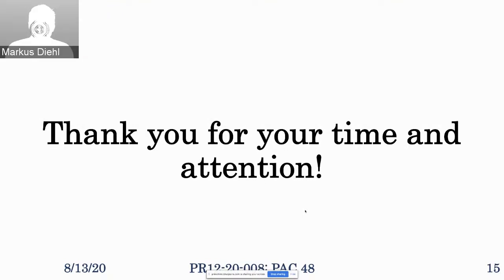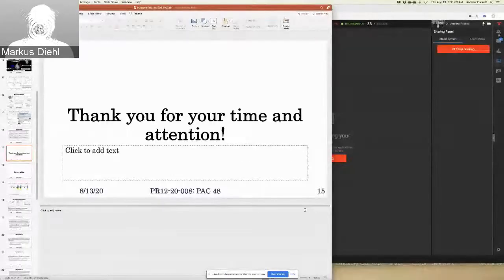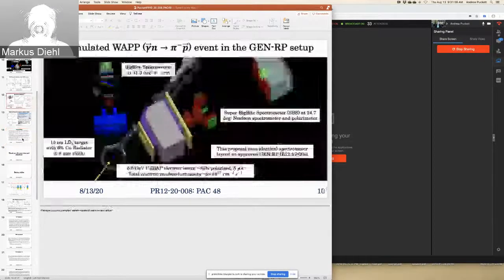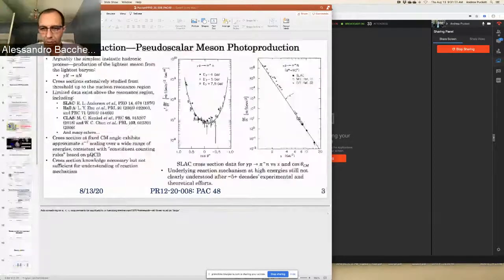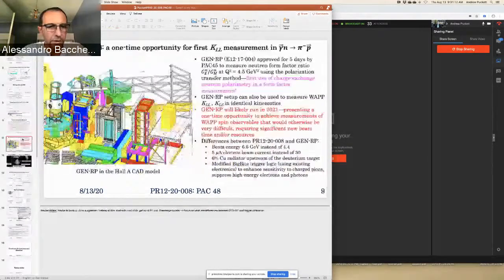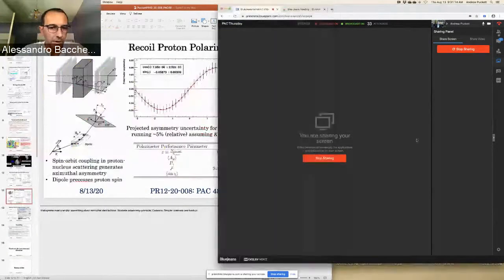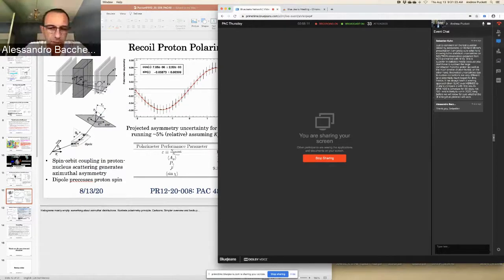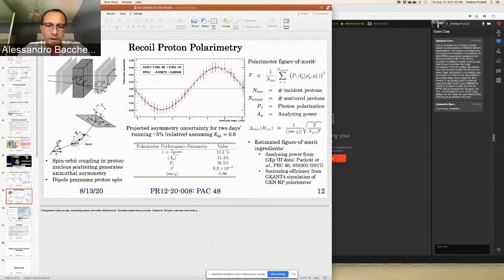Thank you very much. The questions will be started by Alessandro Paquetta, who is the first reader. Thank you, Andrew, for the presentation. In the presentation, you make the statement that you can provide an unambiguous test of twist-three calculations and important constraints for GPD modeling.